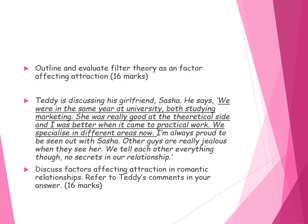If we look at evaluation-based exam questions, you could get a 6-mark question: outline and evaluate filter theory as a factor affecting attraction. For this you'd include AO1 covering the assumptions of filter theory, what it is, and who proposed it, then discuss the three levels and why they are important at each stage, followed by two to three evaluation points depending on how in depth your evaluation is.